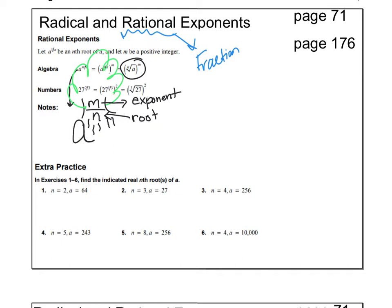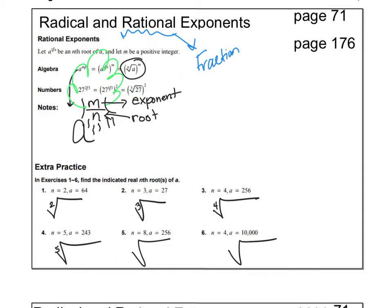For the examples on student journal page 176, the first thing we need to do is write each of these as a radical. I'm going to go through and put a radical symbol on each. N is my root: square root, cube root, fourth root, fifth root, eighth root, and fourth root. The number a goes underneath: square root of 64, cube root of 27, fourth root of 256, fifth root of 243, eighth root of 256, and fourth root of 10,000.